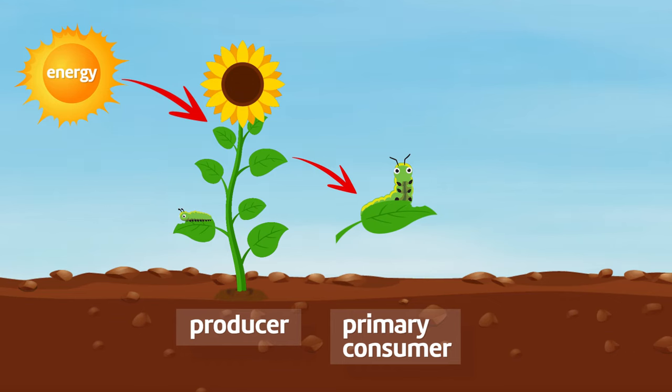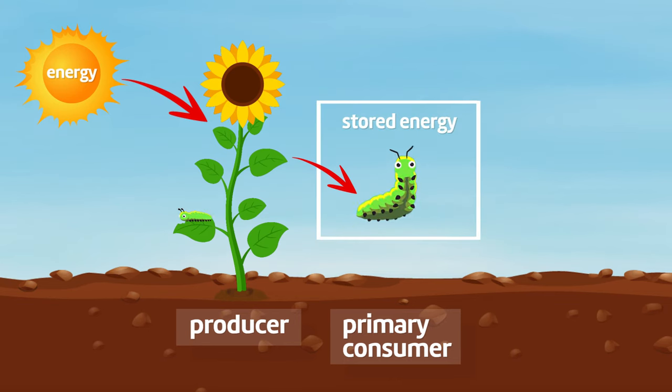Of that energy from the plant, some will be used by the caterpillar for cellular respiration, or lost as either heat or waste, while the rest of the energy is stored in the body.